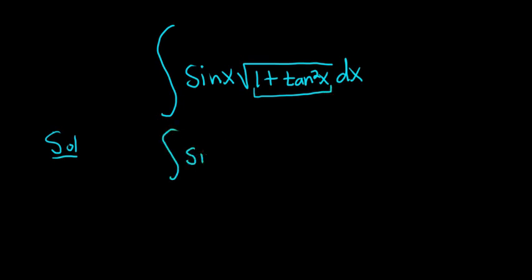So we have the integral of sine x, and 1 plus tangent squared is equal to secant squared. So a good first attempt is to use this identity immediately and see what happens.